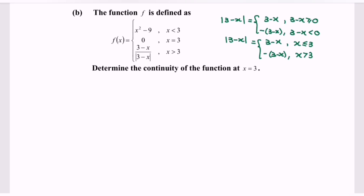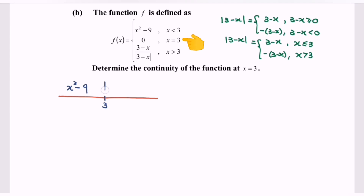Kindly illustrate the situation on a number line. Locate the value 3 and observe the piecewise function. For x less than 3, we have the function x squared minus 9. When x equals 3, the function equals 0. For x greater than 3, we have (3 minus x) over the modulus of (3 minus x), where the denominator becomes negative (3 minus x) for this situation.